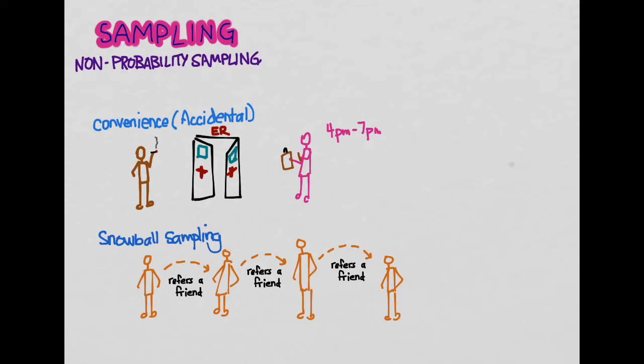In purposive sampling, sometimes also called judgmental sampling, the researcher depicted here with a magnifying glass because he's trying to research something. This person picks who is in the sample, so they try to use their own judgment, so they might say...